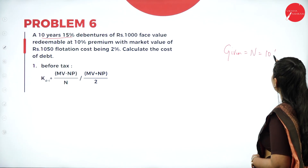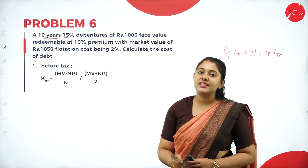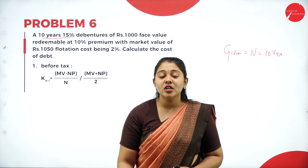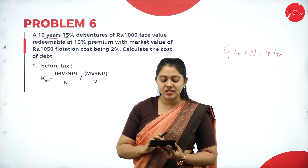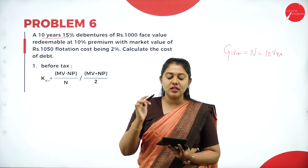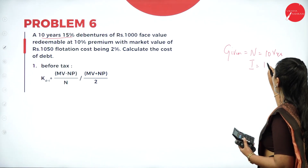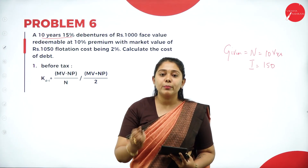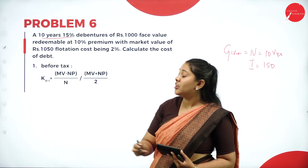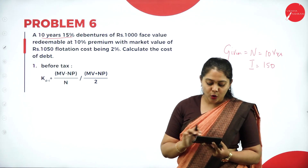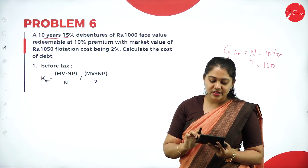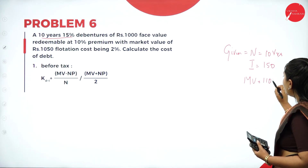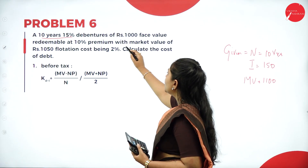Given: number of years is 10. The 15% debenture has a face value of rupees 1000, so interest = 1000 × 15% = 150 rupees. They are redeeming at a premium of 10%, so 1000 × 10% = 100 rupees. Therefore, the maturity value is 1100 rupees.